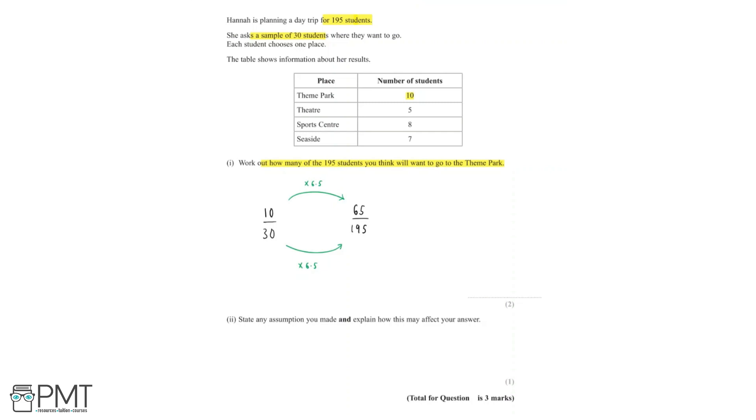And so we've used the fact that 10 students out of a sample of 30 students wanted to go to the theme park, and so using this multiplier of 6.5, we found that 65 students out of the 195 students will want to go to the theme park. And so we can write down our answer of 65.